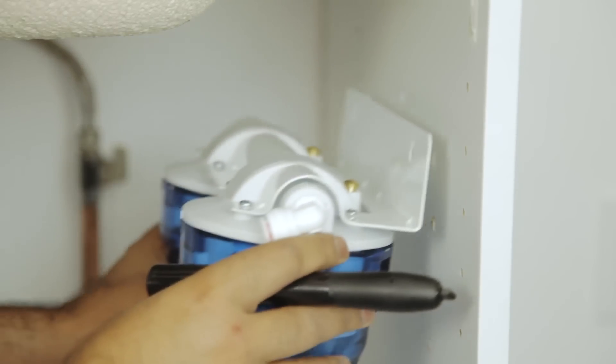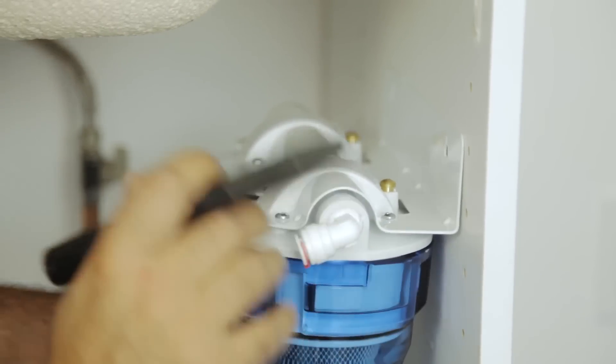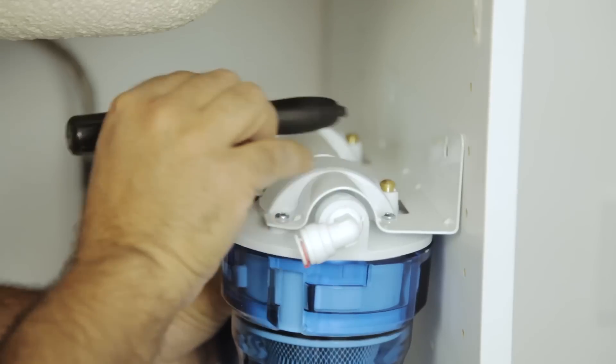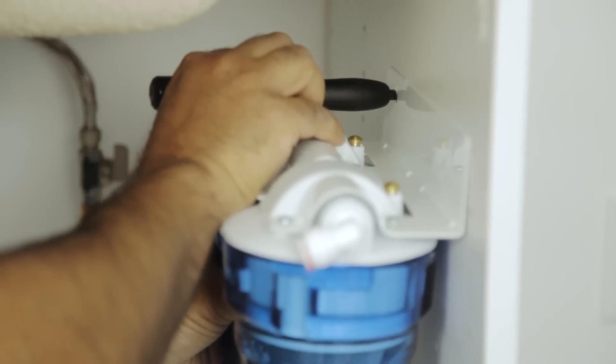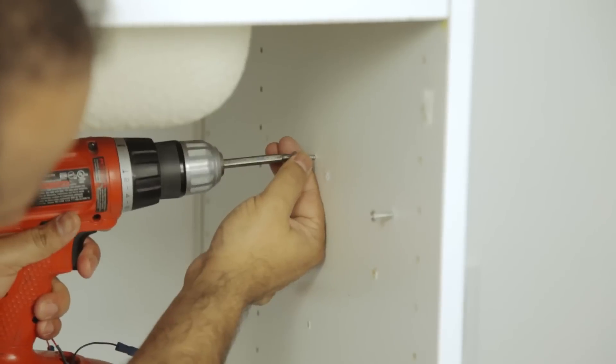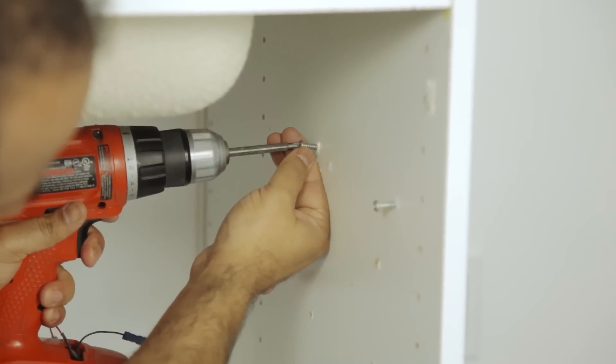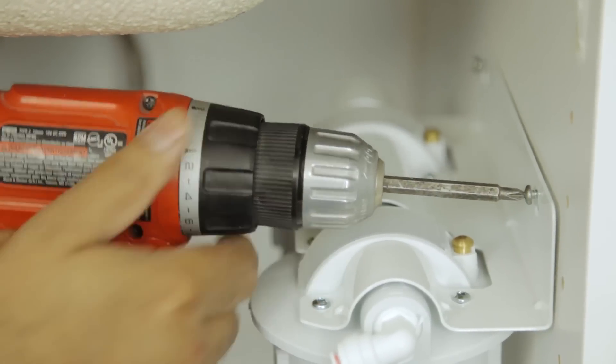Locate best position for mounting unit under sink near faucet. Leave minimum of 5 inches clearance below sumps to allow removal of cartridges for cleaning and replacement. Using the mounting bracket as a template, mark the mounting screw locations. Partially screw in the mounting screws and mount the bracket. Tighten the screws.